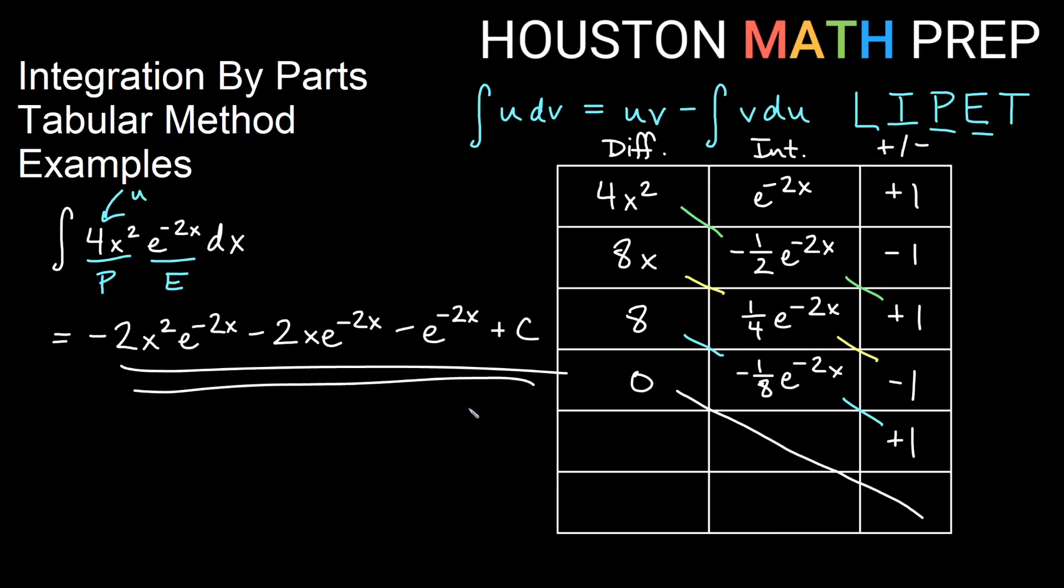You could factor out some things if you wanted to go ahead and say this is e to the negative 2x times negative 2x² minus 2x minus 1 plus c. You could certainly do that. Either way you like. Hopefully these give you an idea of how to work through tabular method the way that we show it. Good luck with your tabular method and integration by parts. We'll see you in the next video.